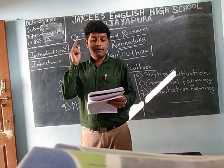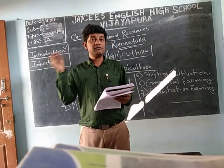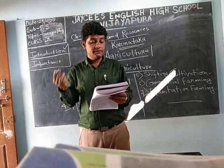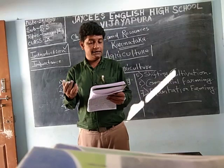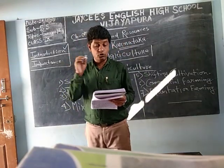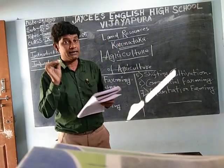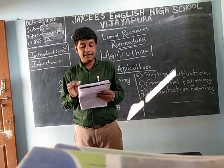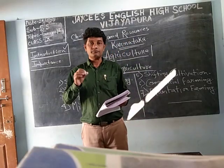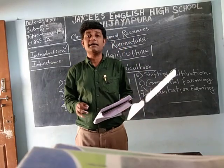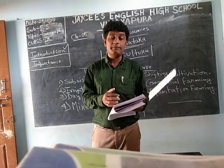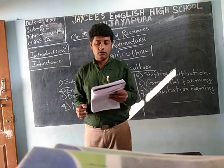Animal husbandry, poultry — which means chicken farming, where eggs are produced — and beekeeping for honey, along with sericulture, are included under agriculture. Nearly 61.4% of the people in Karnataka are in rural areas and they depend on agriculture for their livelihood. In rural areas, the main source of living is agriculture.